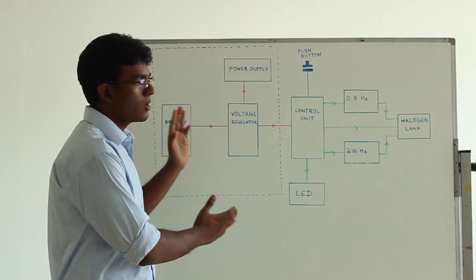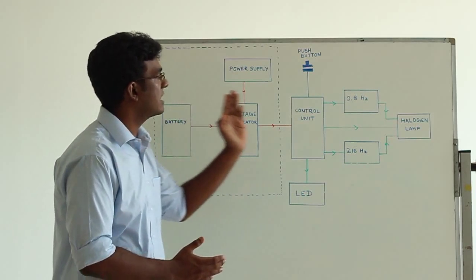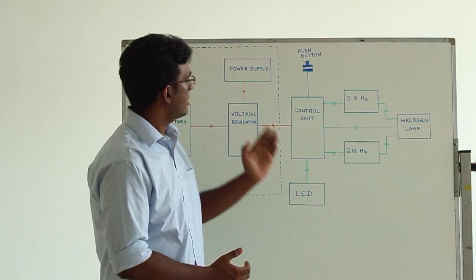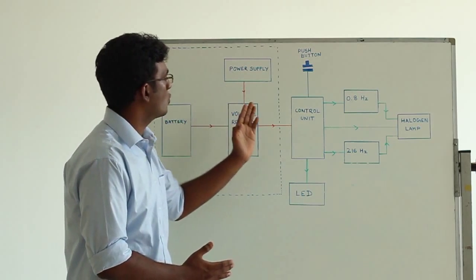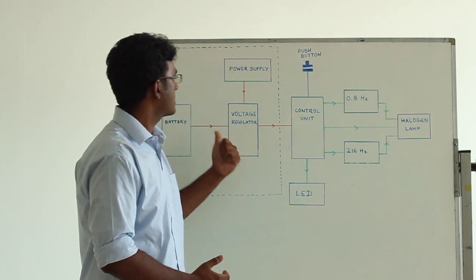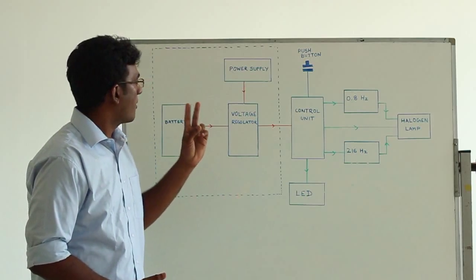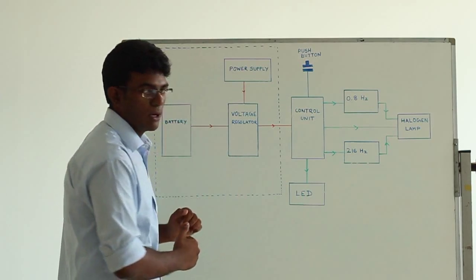So this block diagram here explains the entire functionality of the torch. Here you can see it is divided into two main parts. The first part is the power supply part. Here you can see a voltage regulator.